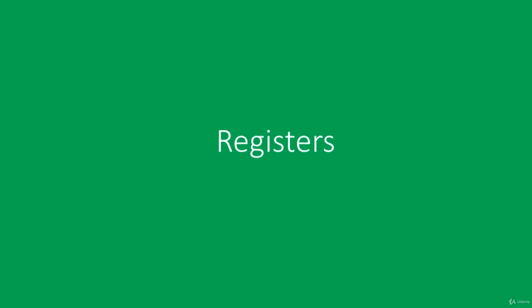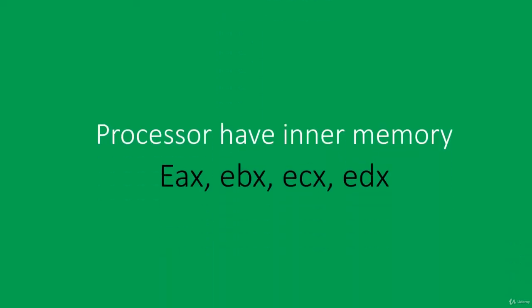As you know from the first section, every processor has inner memory, and in this memory registers live. We already know four of those. Historic processors such as the 8051 had only one register like this, and that was the accumulator. Later, other registers were added. The letter E at the beginning of a name says that the register is 32 bits. Without the E character we get 16-bit registers, but we still use the same register — only without E, we are using only part of it.